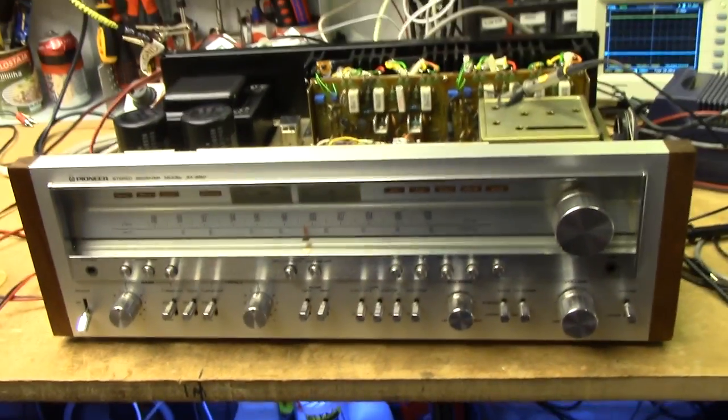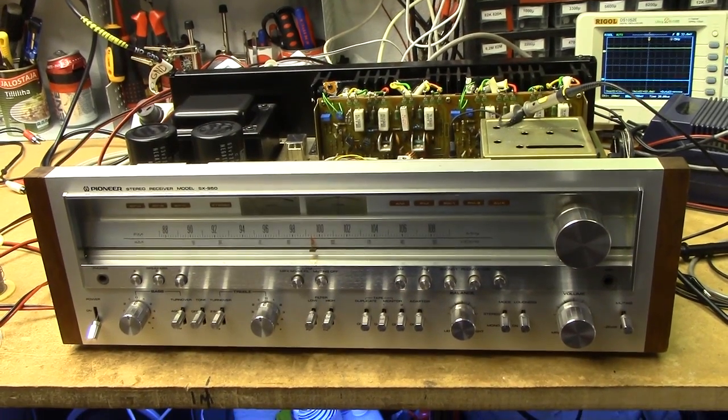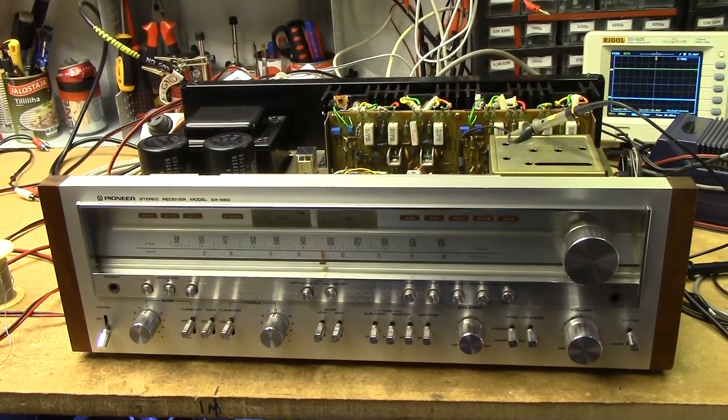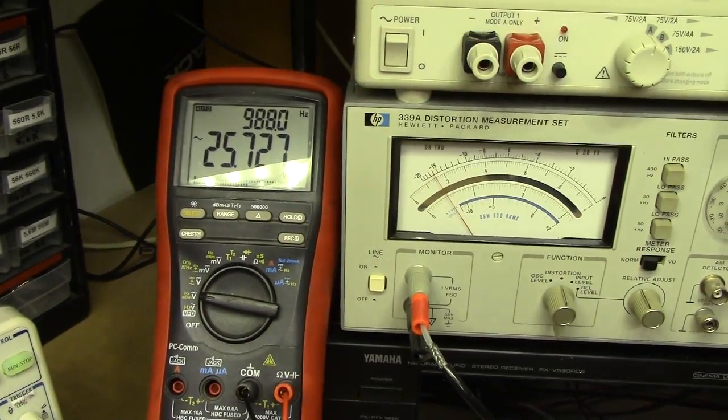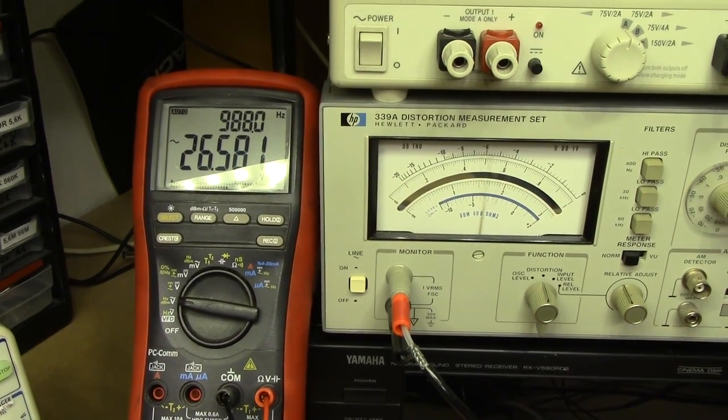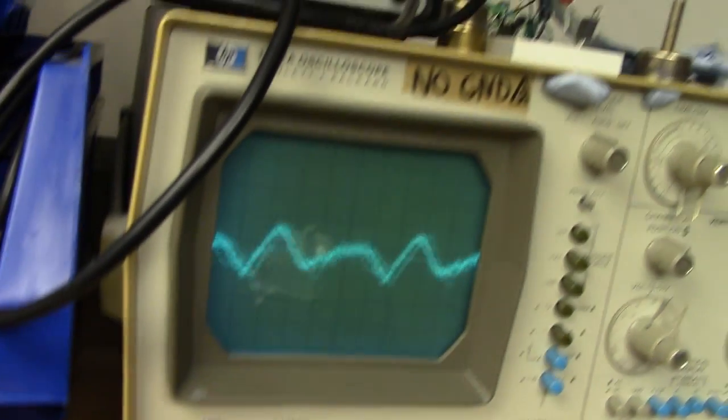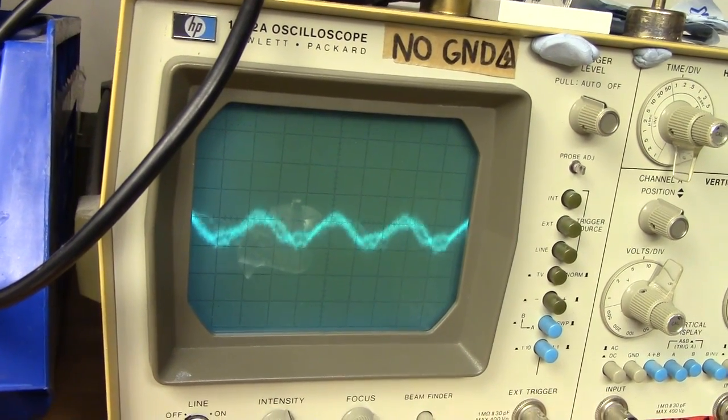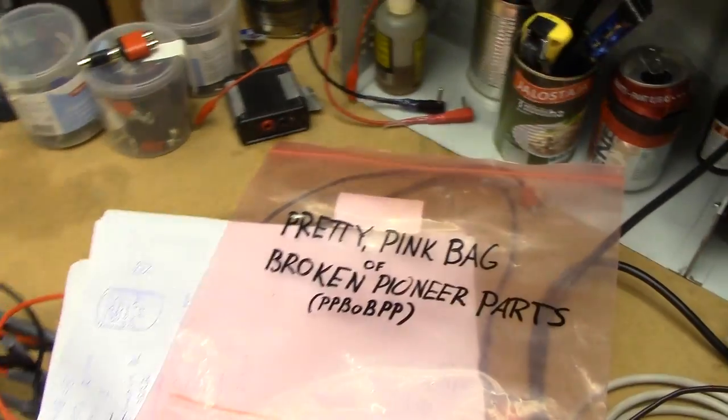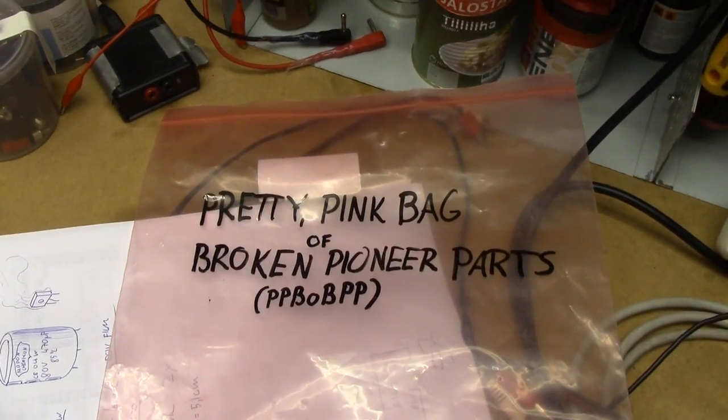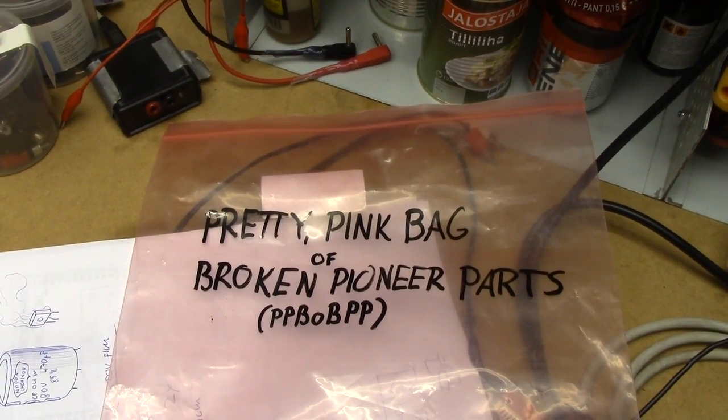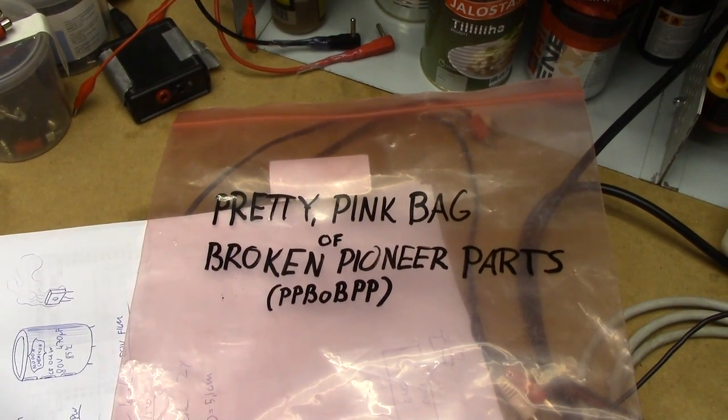So there you go, little side note, troubleshooting a bit of oscillation. Yes indeed, both channels are now perfectly clean, pushing for rated power, just normal harmonic distortion. And we didn't even have to add anything to the pretty pink bag of broken Pioneer parts. Cheerio!